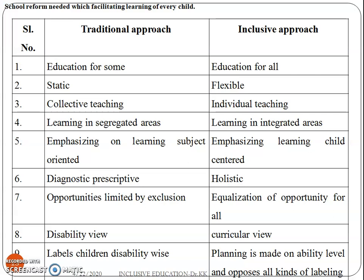In the classroom situation, the teacher will teach with reference to the individual differences of the learner. In the traditional approach it is collective teaching, whereas in the inclusive approach it is individual teaching. In the traditional approach, the teacher fails to reach every student, whereas in the inclusive approach, teachers have to reach the unreached corners and help students overcome their problems. In the traditional approach, learning is in segregated areas, whereas in the inclusive approach, learning is in integrated areas.